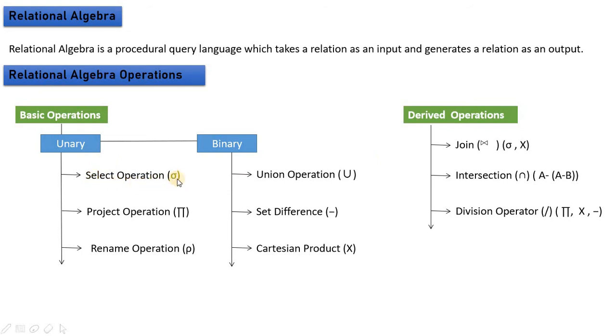Select operation with its symbol, project operation with its symbol, and rename operation with its symbol - these are unary operations. One single table will perform the operation and show you the output.